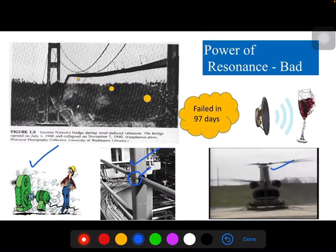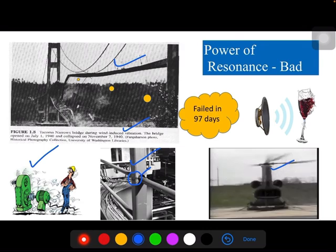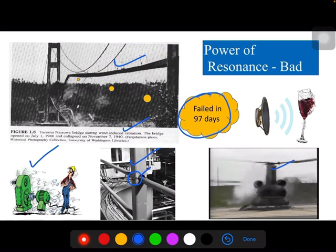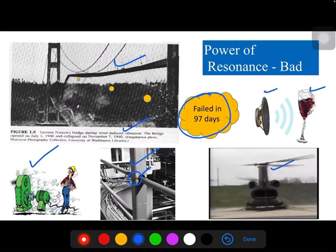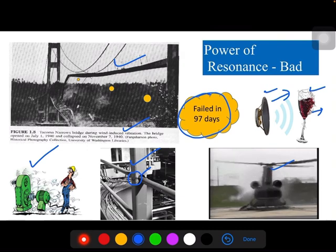You might have heard about the collapsing of Tacoma Narrows Bridge. It collapsed because of wind induced vibration. It was installed on 1st July 1940 and it collapsed on 7th November 1940, means it failed in 97 days because of this resonance effect. Also it has the power to break a wine glass. If you place a loudspeaker nearby the wine glass with a higher pitch, then it can break the wine glass.